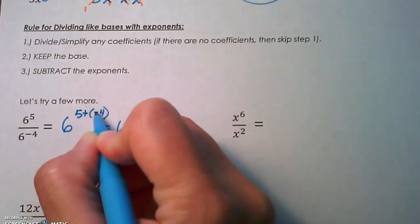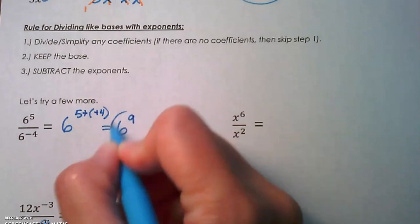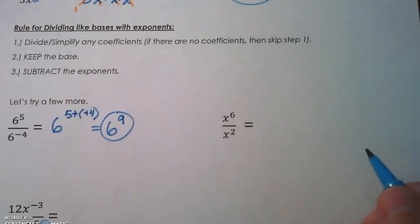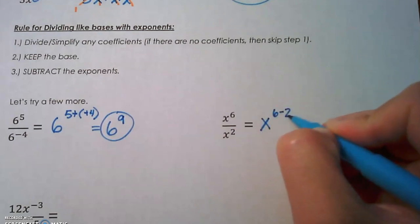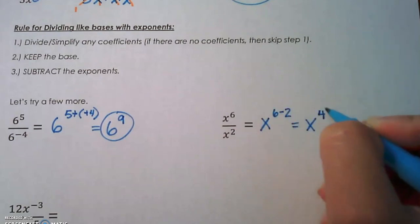Next one is 6x to the sixth divided by x squared. That's going to be x to the 6 minus 2, which is x to the fourth.